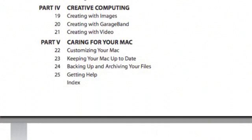Finally, in the last part I look at customizing your Mac, setting preferences, and getting your Mac to look and work the way you want, as well as keeping your Mac up to date. Chapter 24 is one of the most important chapters — it talks about backing up your files, archiving them, using Time Machine and also Disk Utility to create archives. In Chapter 25 I talk about where to go next and where to get more help, whether it is at MacMost.com, Apple.com, or at third-party sites.